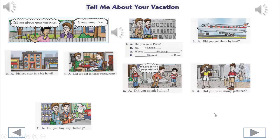Do exercises 2 through 12. You will hear the correct line after you speak. 2. We'll begin. Did you get there by boat? No, we didn't. How did you get there? We got there by plane.